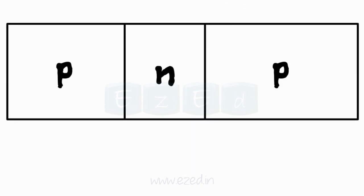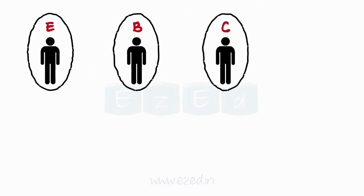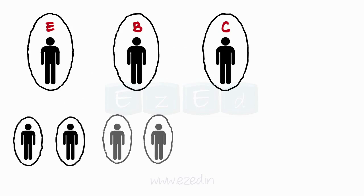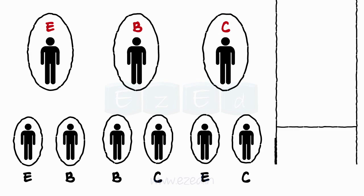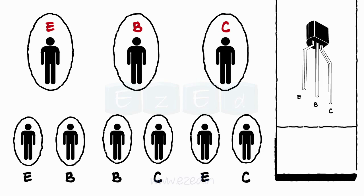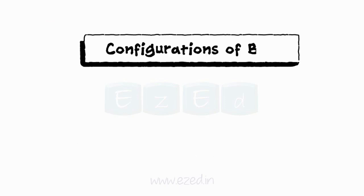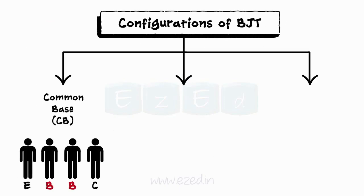The working of the PNP transistor is similar to the NPN. Consider three friends E, B, and C who always stay together forming pairs as EB, BC, or EC. One friend is always common. Similarly, one of the three terminals of the BJT acts as a common terminal between input and output. Based on this concept, there are three basic configurations of BJT: common base, common emitter, and common collector.